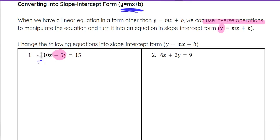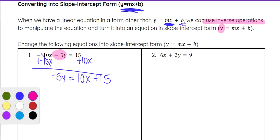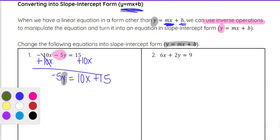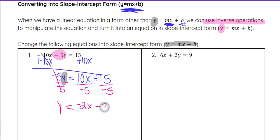So to do that, we'll do the inverse of negative 10x, so we add plus 10x on both sides. That gives us negative 5y equals — since we usually write the x term first and the constant second — 10x plus 15. Now y is not by itself yet. To get y by itself, we divide by negative 5 on every term on both sides. Negative 5y divided by negative 5 is y; 10x divided by negative 5 is negative 2x; and 15 divided by negative 5 is negative 3. So the equation in slope-intercept form is y equals negative 2x minus 3.